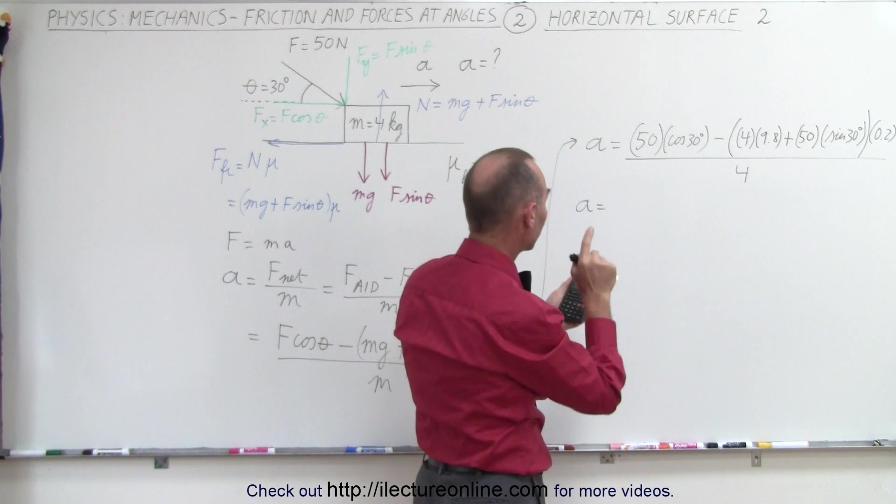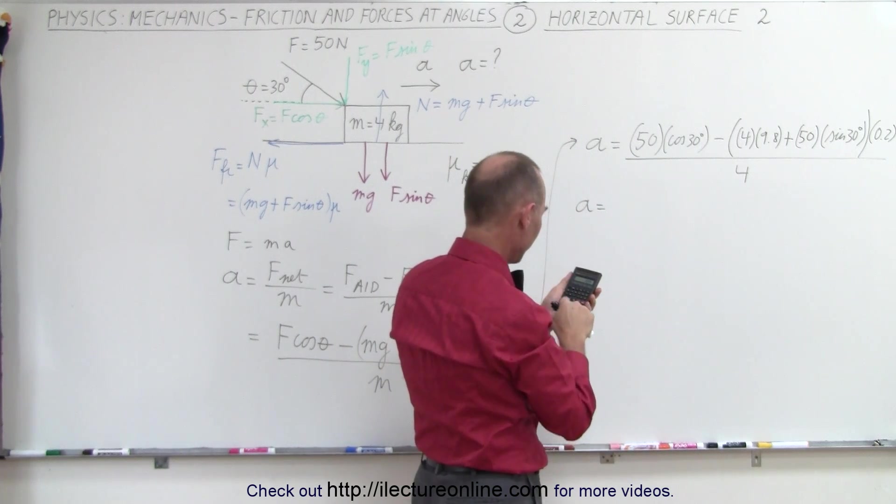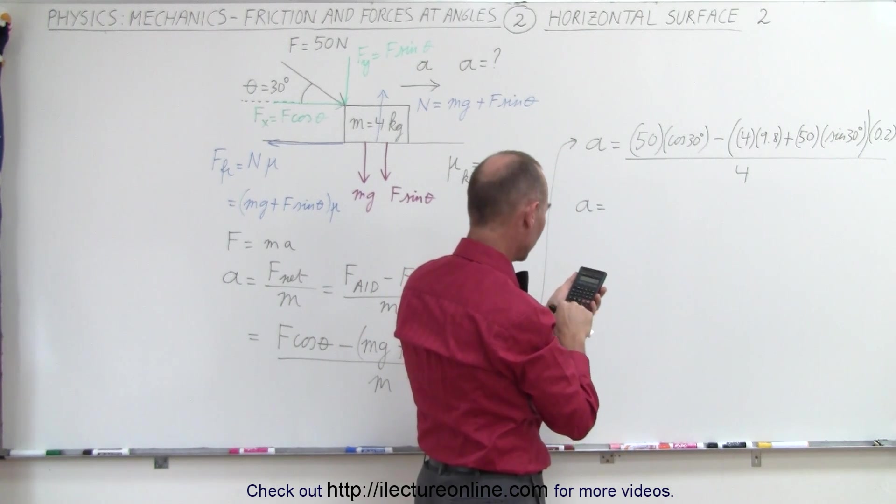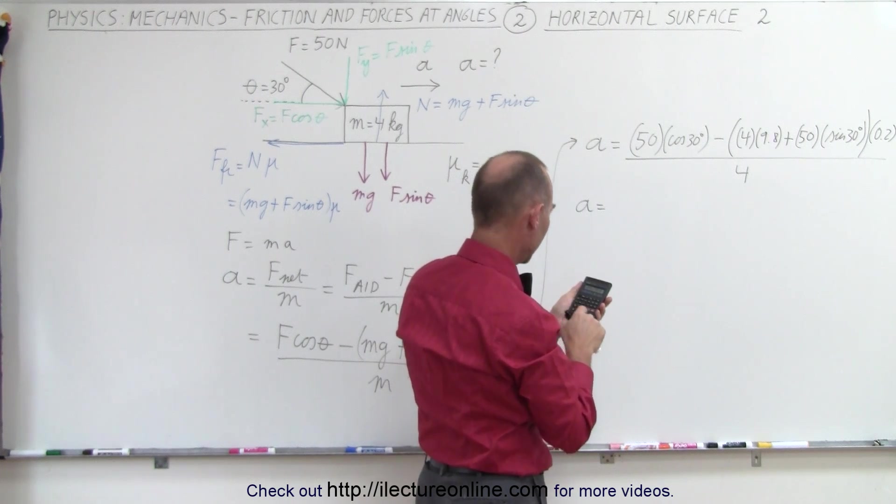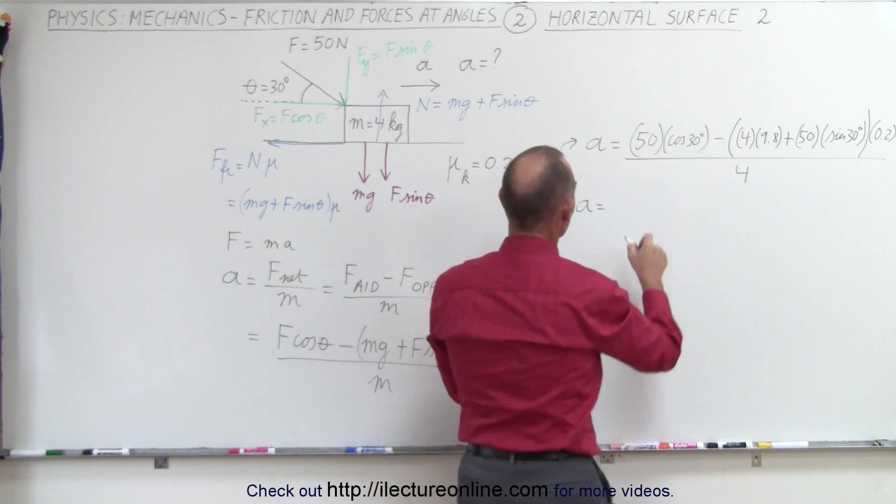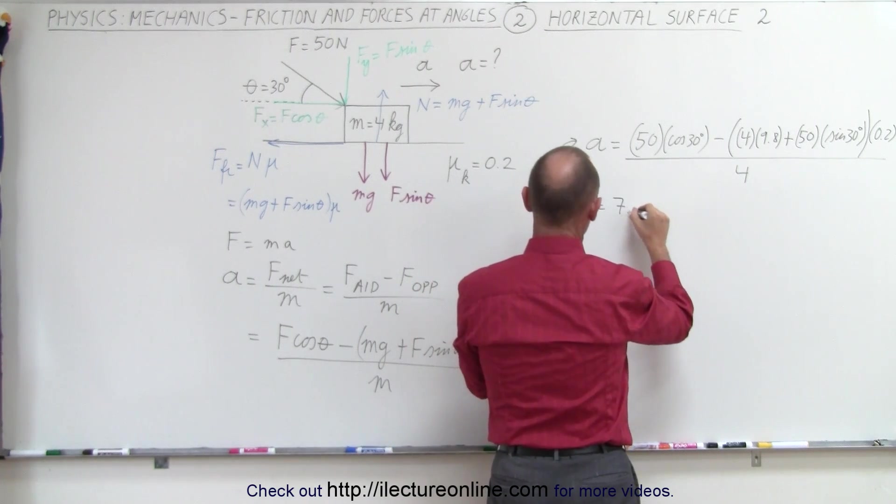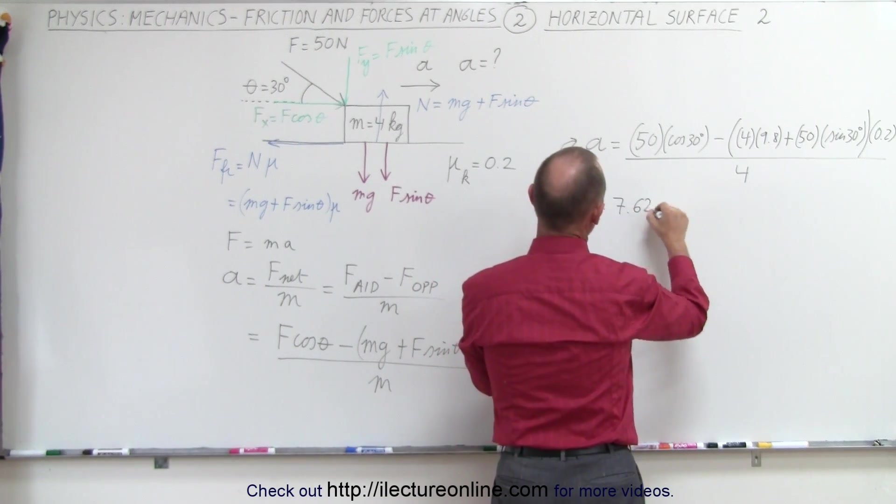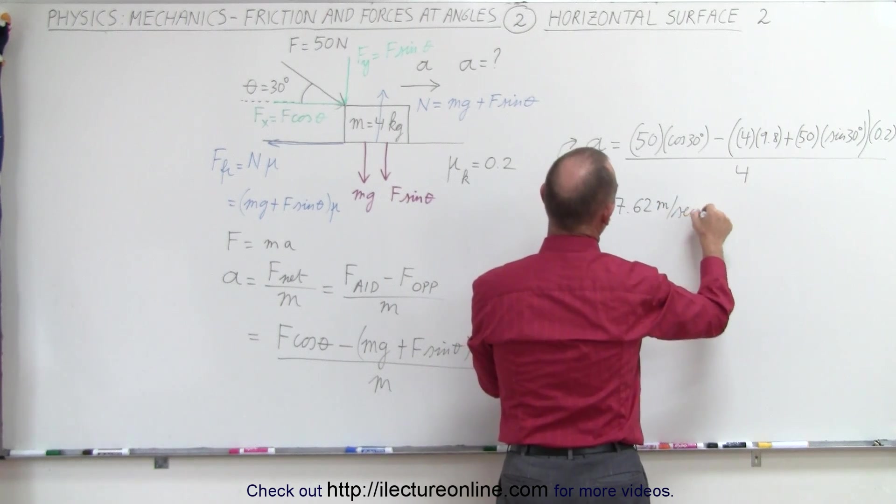We subtract that from 50 times the cosine of 30, and divide by 4. It turns out the acceleration would be 7.62 meters per second squared.